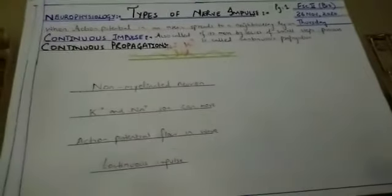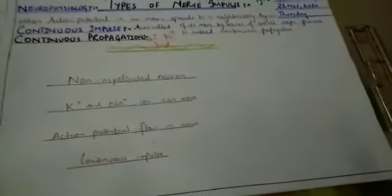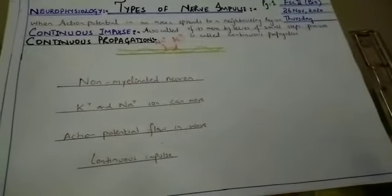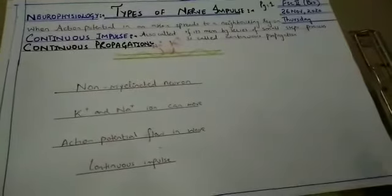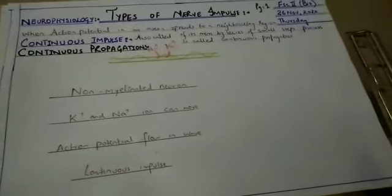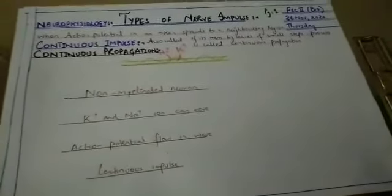So we can say that continuous impulse आपके पास ऐसी impulse है, जिसमें sodium और potassium ions move कर सकते हैं. Action potential जो है, वो wave की form में travel करेगी, यानि jumping manner में नहीं, बल्कि wave की form में travel करेगी, और ये wave जो है, वो continuously travel करेगी.